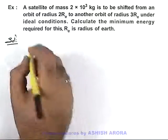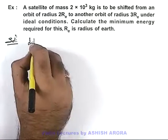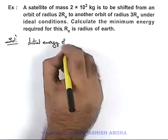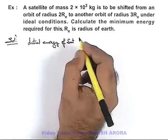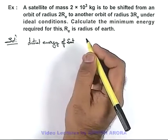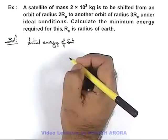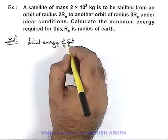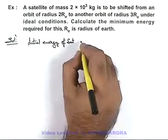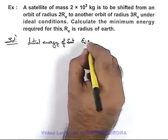In this situation we can easily find out the initial energy of satellite, as we just need to find out the difference in satellite energies. That is the amount of energy required to change its orbital radius from 2Rₑ to 3Rₑ. So initial energy when it was in the orbit radius 2Rₑ can be directly given as E initial.